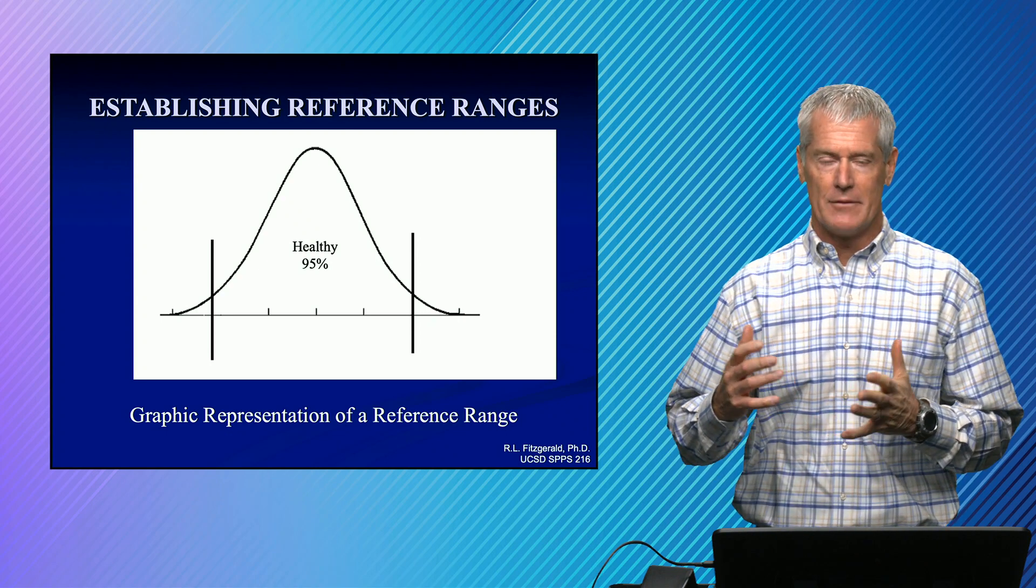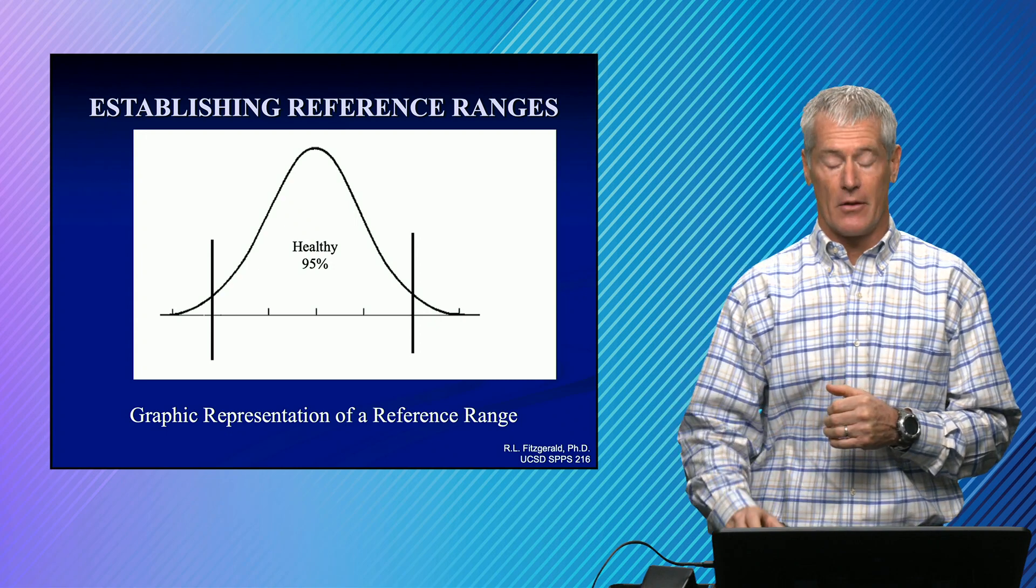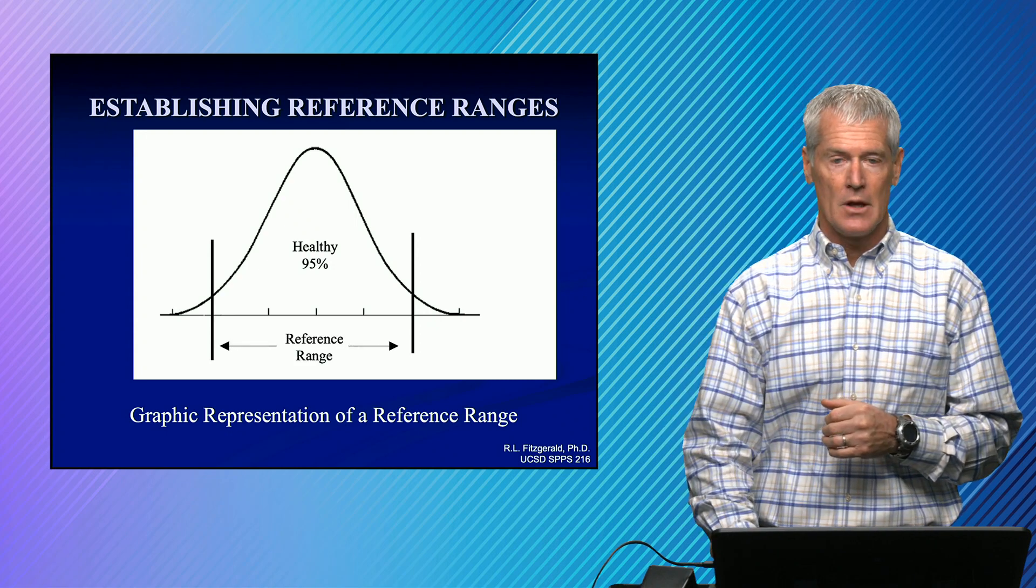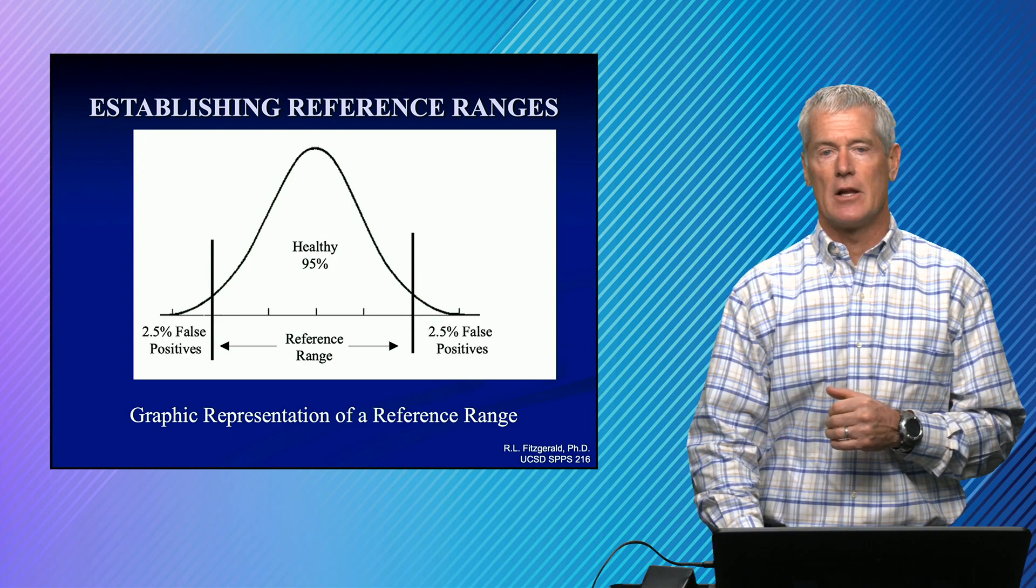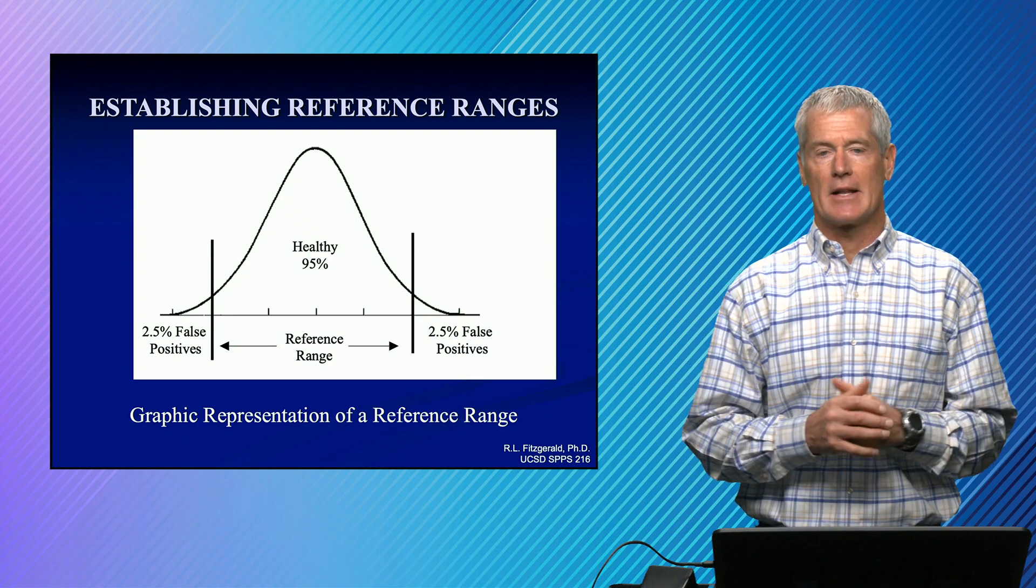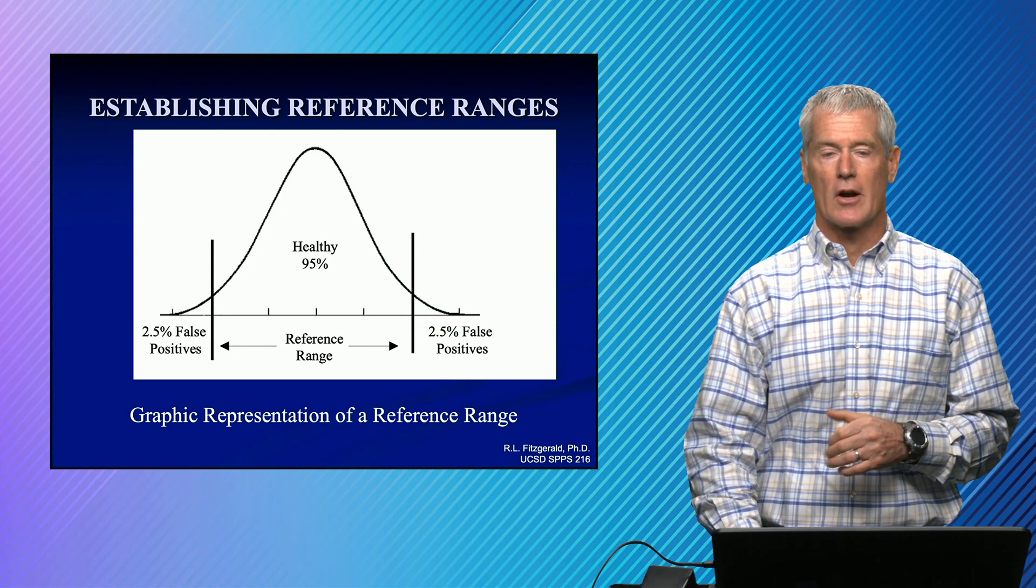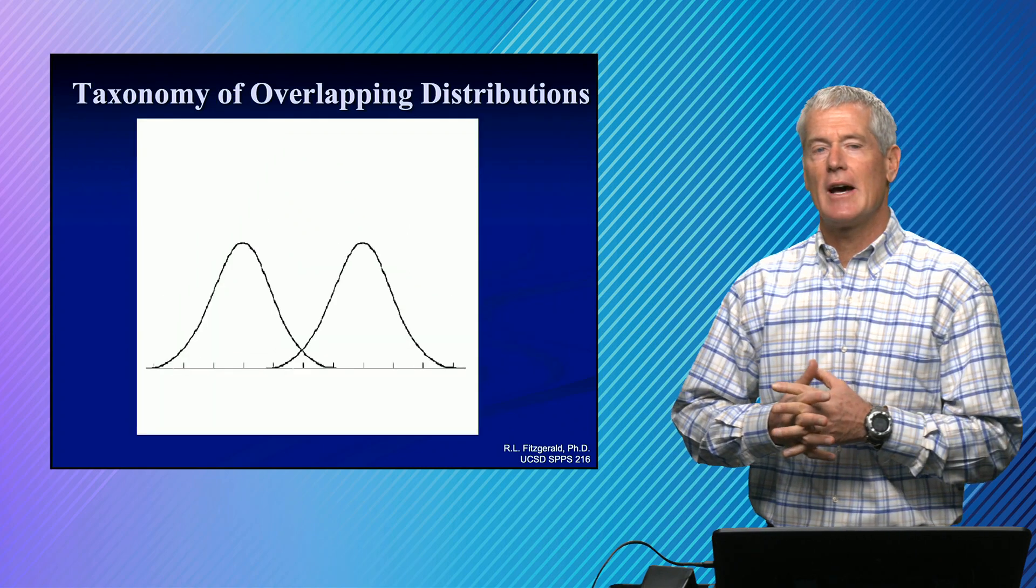And so obviously if you order things that are not necessary, you're going to be obligated to follow them up. So our inner 95% is our reference range. At the lower and upper ends, we have what we call false positives. They're going to be incorrectly classified because we're just talking about the inner 95% as a reference range.